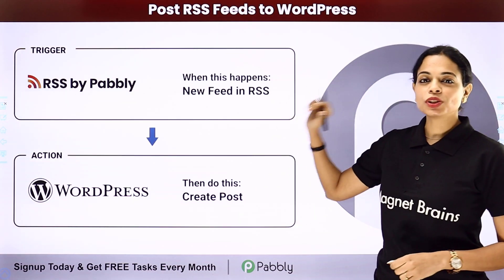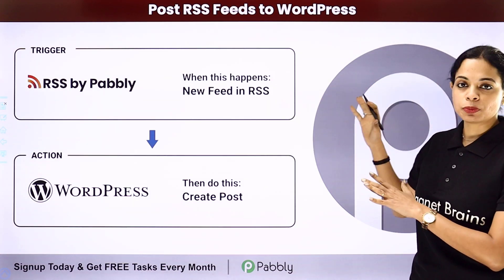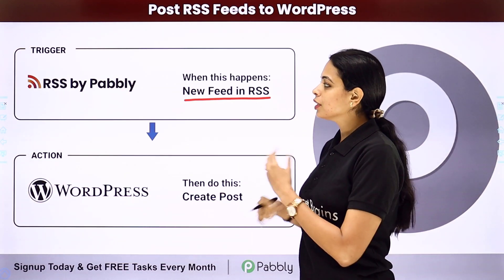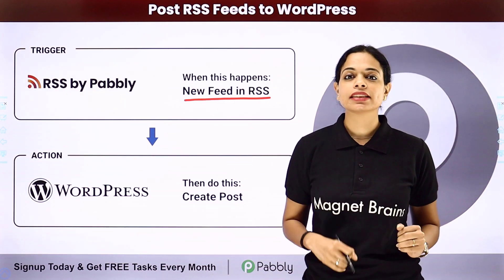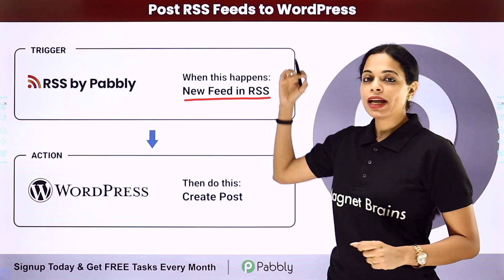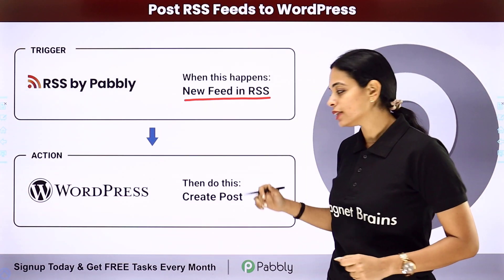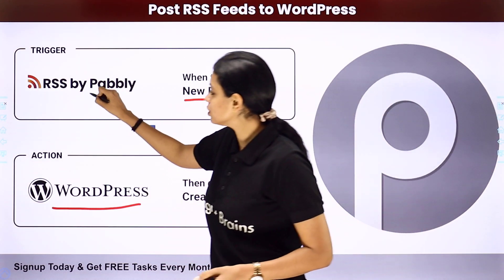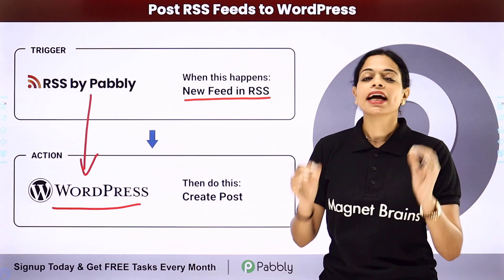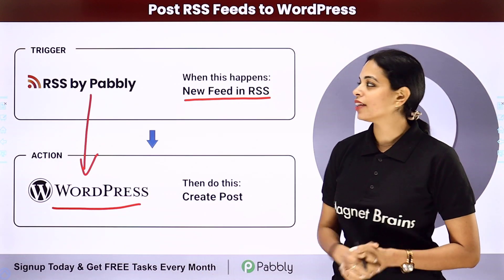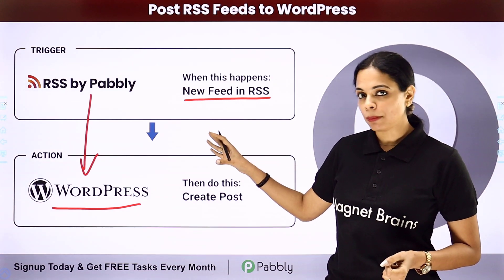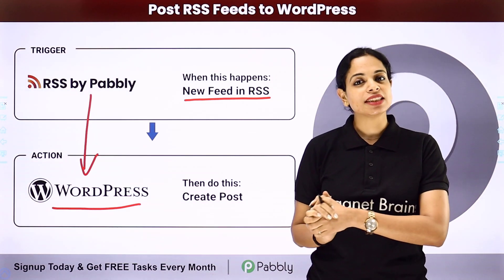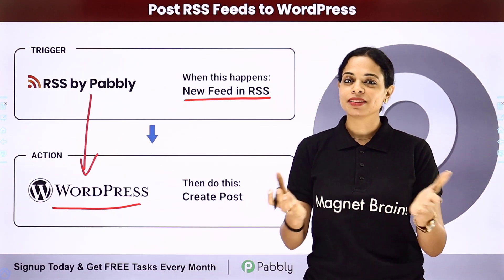In this video, we are going to see how to post RSS feeds in WordPress. Every time a new feed is added in RSS — for example, in this video I have taken the example of Times of India RSS feeds — it should automatically be created as a post in WordPress. To make that happen, you need to set up an integration between the two applications, which can be done using Pabbly Connect. The trigger application would be RSS by Pabbly and the action application would be WordPress.